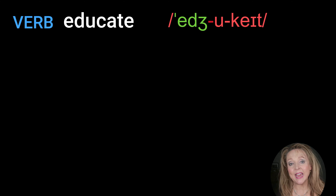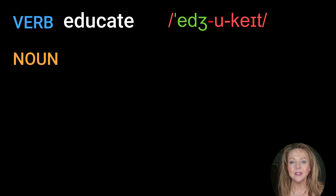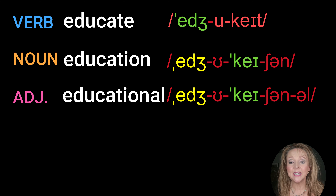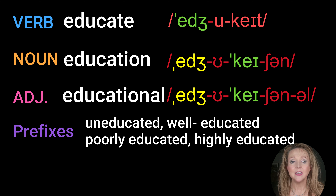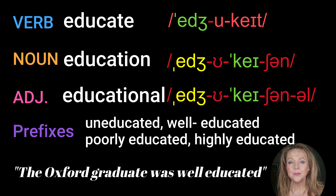Remember, there are many exceptions in English, so it's a good idea when you learn a word to learn its word family too. Build word families with example sentences showing the stress and meanings of the words. For example, take the word 'educate': the verb 'educate', the noun 'education', the adjective 'educational', and prefixes: uneducated, well-educated, poorly educated, highly educated. For example: 'The Oxford graduate was well-educated.' Did you notice the difference in stress in the word family?